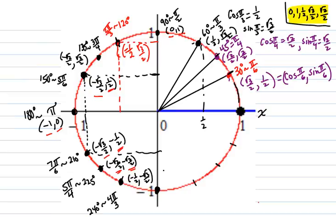Going down to this point, reading right off the graph: 0, negative 1. That is a 270-degree angle, coterminal to 3π/2. So the cosine of 3π/2 is 0, and the sine of 3π/2 is negative 1.